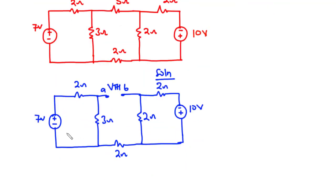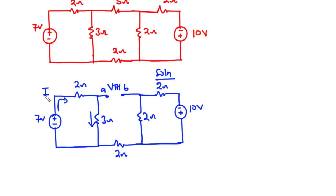Considering this loop, this 7 volt source is going to drive current in the clockwise direction through the 2 ohms resistor, the 3 ohms resistor, and then finally return at the negative terminal of this voltage source. We don't have any current flowing in this direction because we have this to be open-circuited, so the current that flows through the 2 ohms resistor is the same current that flows through the 3 ohms resistor. Let's call the current produced by the 7 volts to be I.